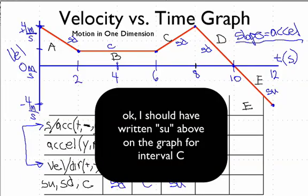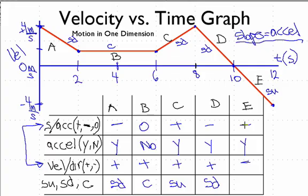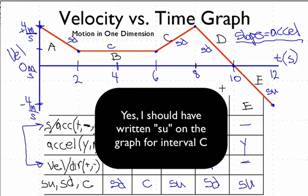In section D, negative slope but positive velocity — opposite signs, so slowing down. In section E, negative slope and negative velocity — same signs, so speeding up. These answers match exactly what we found by just reading the graph, and they should.